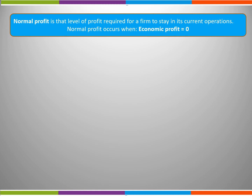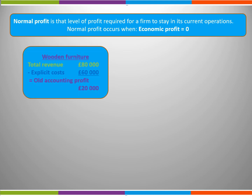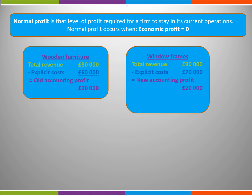It came up with the following data. Firstly, we have the actual figures from last year, where the firm made an accounting profit of £20,000. However, for the window frames it forecasts explicit costs to be £70,000 rather than £65,000. The opportunity cost of moving from wooden furniture to window frames is the £20,000 profit that the firm would forego by the move. From a financial point of view, when we take into account the loss of the accounting profit when it made wooden furniture, the firm is no better off. If it moved into making window frames, it would have an economic profit of £0. As normal profit occurs when economic profit equals zero, there would have been no point in the firm changing markets.